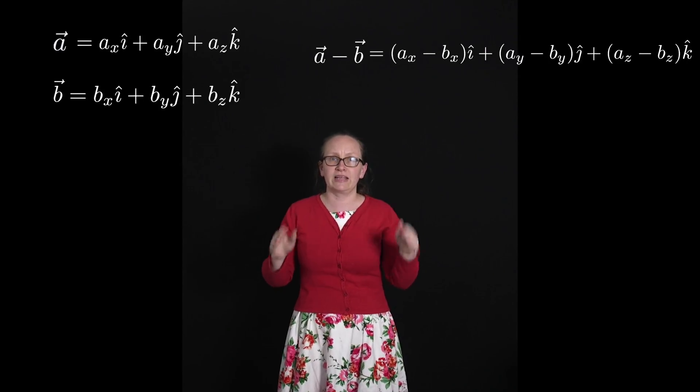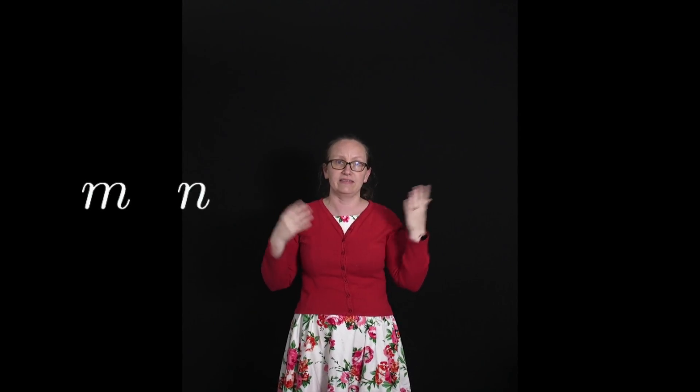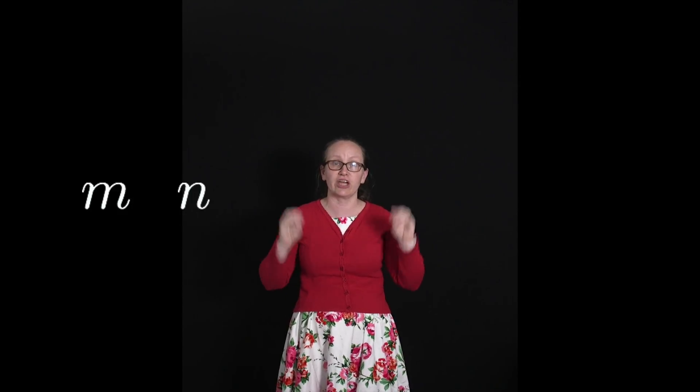It's also really easy to deal with multiplying these vectors by scalars. So a scalar, remember, is not a vector, it's only got a magnitude. So if we had two integers, let's call them m and n, but they can be any number.